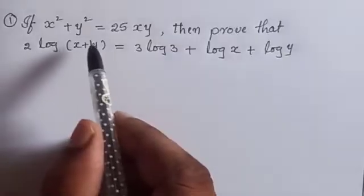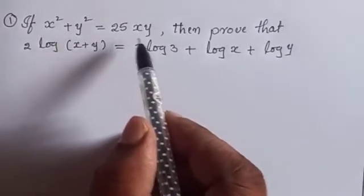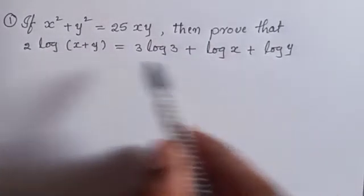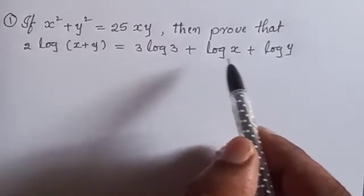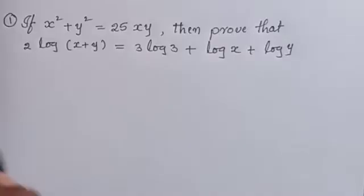If x square plus y square is equal to 25xy, then prove that 2 log of x plus y is equal to 3 log 3 plus log x plus log y. So, this is the question given.